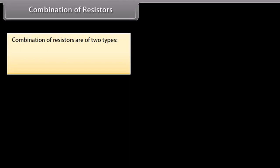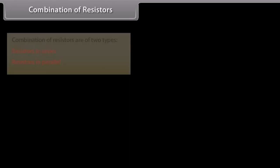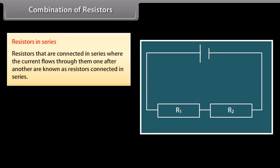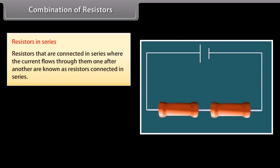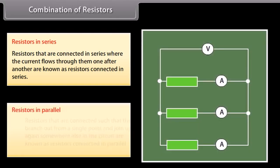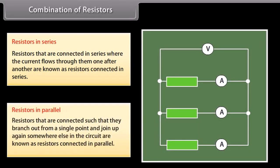Combinations of resistors are of two types: resistors in series and resistors in parallel. Resistors connected in series are those where the current flows through them one after another; here, the current depends on the applied voltage, the number of components, and the nature of components. Resistors in parallel are connected such that they branch out from a single point and join up again elsewhere in the circuit; here, the total current from the battery is the sum of the currents through each branch.